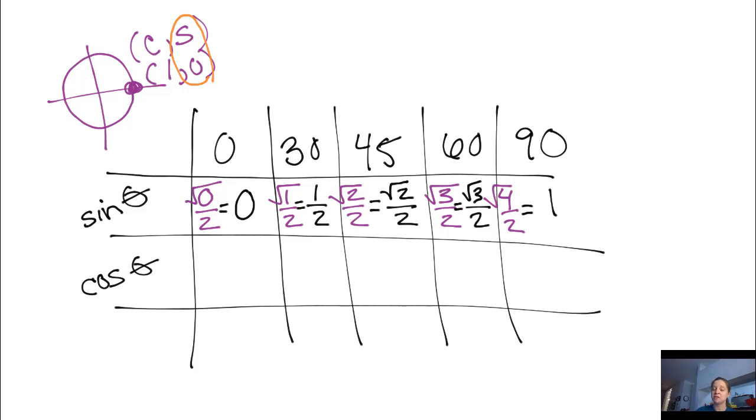So on a test, if I ask you for the sine of 60 degrees, you should know that's square root of 3 over 2. If I ask you for the sine of 30 degrees, you should know that's 1 half. You might need to draw this diagram. That is what I did as a student taking tests. This is how I quickly reference what things were.